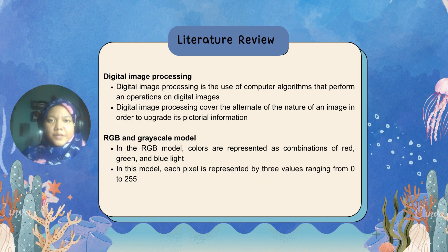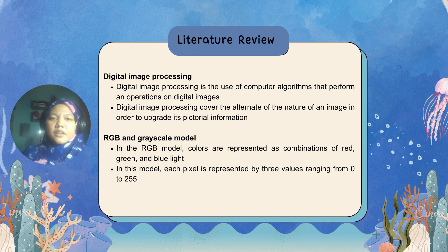For the literature review, the first topic is Digital Image Processing. Digital image processing is the use of computer algorithms that perform operations on digital images, covering image enhancement, restoration, segmentation, and feature extraction. Its applications are used in a variety of fields such as medicine, remote sensing, surveillance, and art. Digital image processing alters the nature of an image in order to upgrade the pictorial information for human eyes and interpretation, mainly to suit autonomous machine perception.